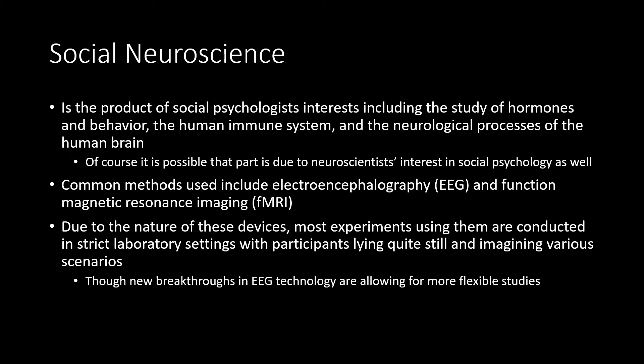Finally, there is the branch of social neuroscience. This is probably the product of social psychologists who had interests including the study of hormones and behavior, the human immune system, or even the neurological processes of the human brain — and at the same time, a group of neuroscientists who had some interest in social psychology — and together this field emerged. Common methods used are electroencephalography, or EEG, or functional magnetic resonance imaging, or fMRI. Due to the nature of these devices, most experiments are conducted in very strict laboratory settings, oftentimes with a person sitting quite still, having them imagine various scenarios and examining their brains while they're doing so.